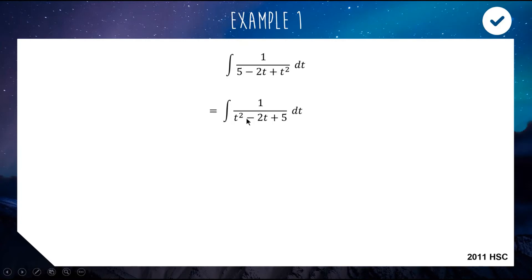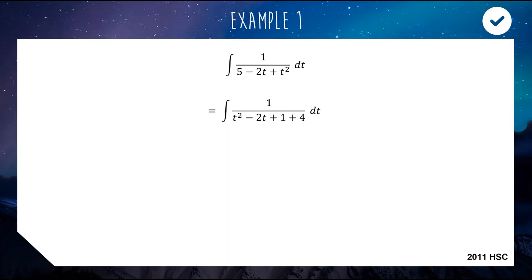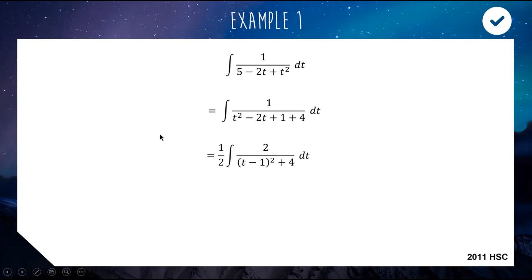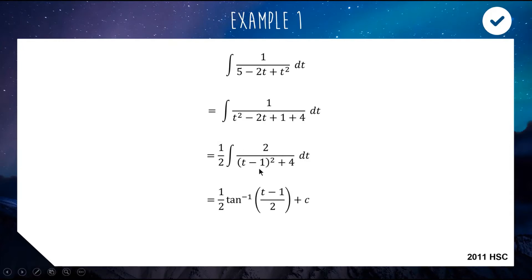Given that this is t² − 2t, we'd really love it if the constant were 1, because then we'd have a perfect square. So instead of writing +5 we write +1 and +4 — it's the same thing — and now we can factorize to get (t−1)² + 4. This is similar to the third flashback question: it's 1 over something squared plus something squared, so we can use inverse tan. We put a 2 on top and a half out the front, apply inverse tan, and the answer is ½ · arctan((t−1)/2) + c.